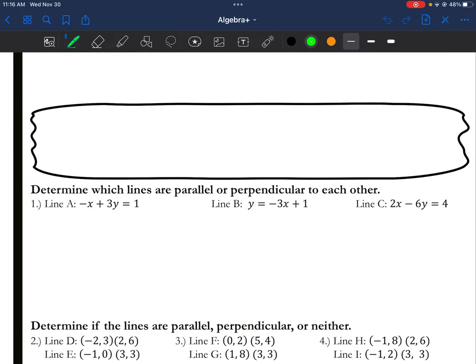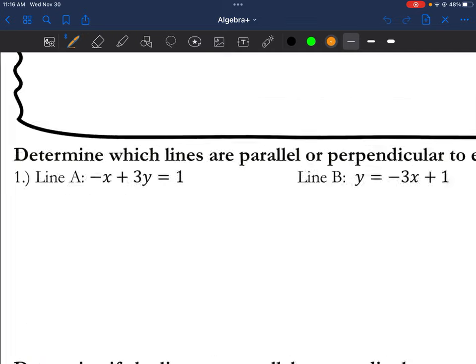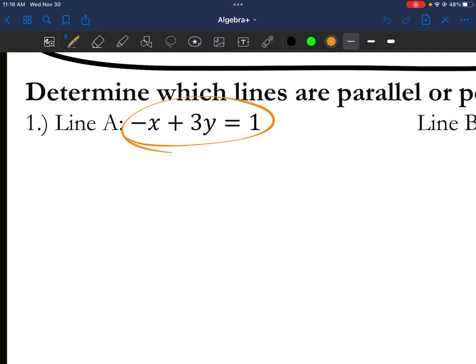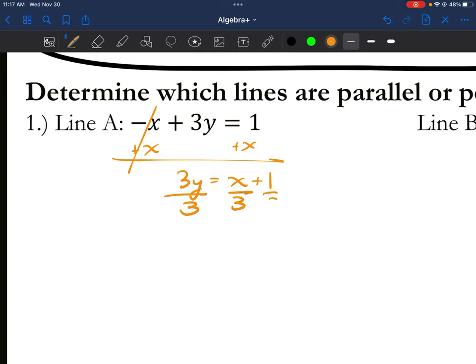Let's try the next one. Solve for the slope. If you notice, this is not in slope intercept form. We need to get it into slope intercept form. Otherwise, we can't tell what the slope is. So let's go ahead and add x. You get 3y equals x plus 1. And then we're going to divide everything by 3.